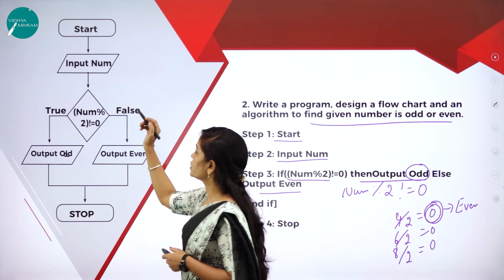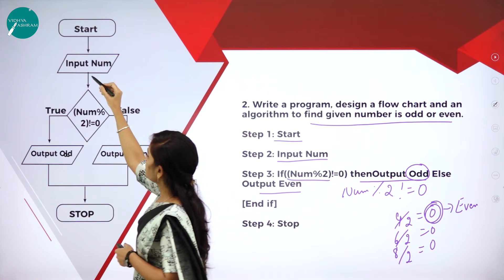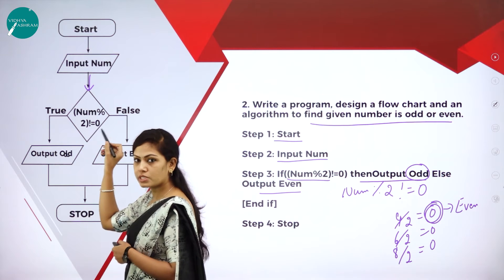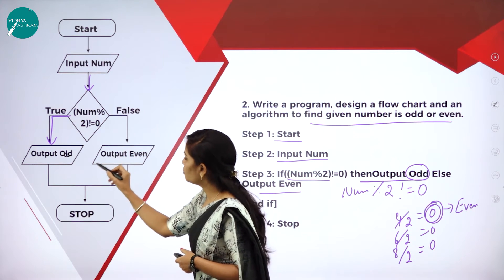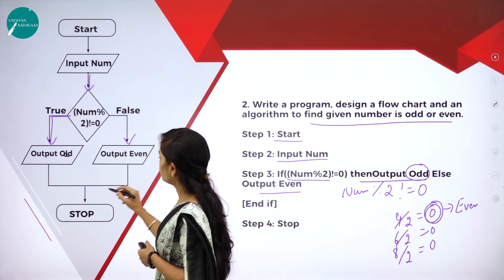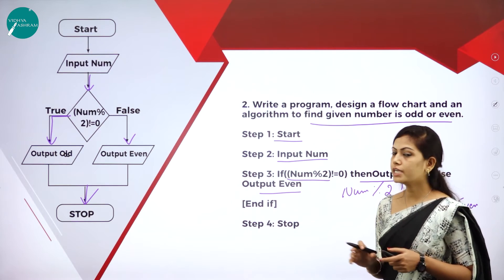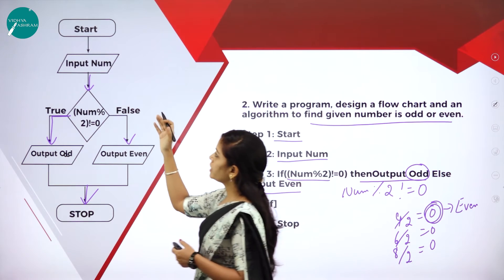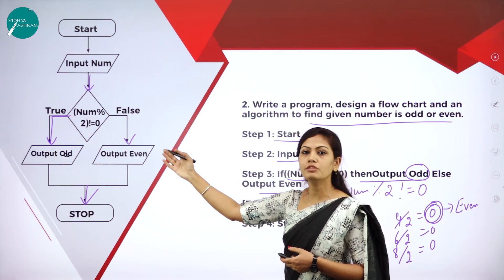Now, how to write the flowchart for the odd or even example? First step is start in an oval. In the decision diamond, write the logic: is number divided by 2 not equal to 0? If the statement is true, the output is odd. If it is false, the output is even. Then end of the program. You have to mention the direction of the flow of data with arrows.